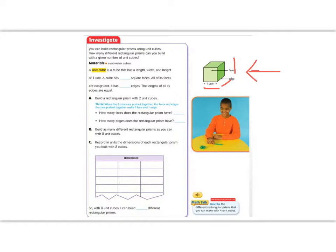Let's go ahead and read the investigate to continue. It says, you can build rectangular prisms using unit cubes. How many rectangular prisms can you build with a given number of unit cubes? So for today's lesson, we are going to think about this cube here and how many different ways I can take those cubes and make a different shape.